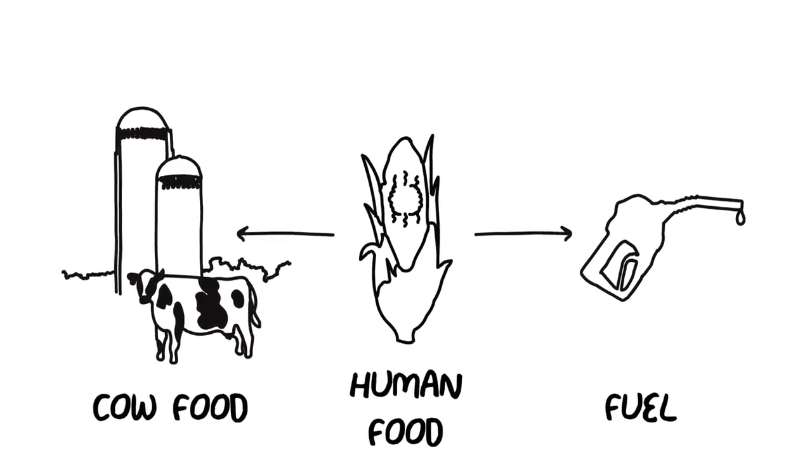But let's think a little bit harder about that corn plant. Sugars can also be found in all of the other parts of the plant, known as the stover.